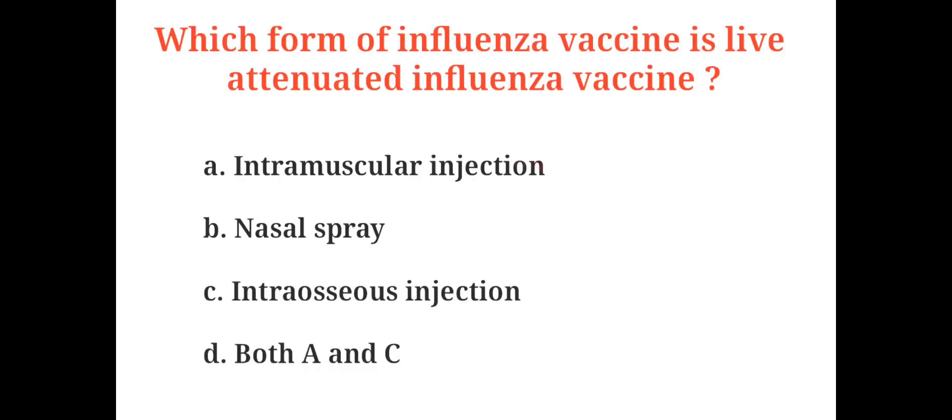Which form of influenza vaccine is a live attenuated influenza vaccine? A. Intramuscular injection, B. Nasal spray, C. Intraosseous injection, D. Both A and C. And the correct answer is B. Nasal spray.